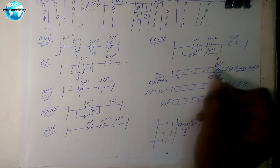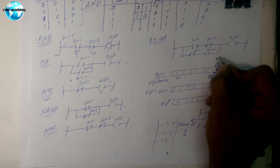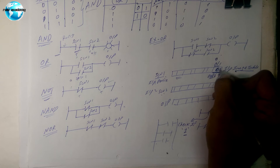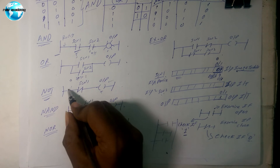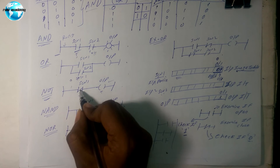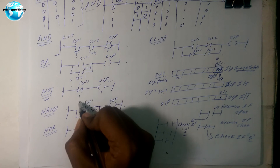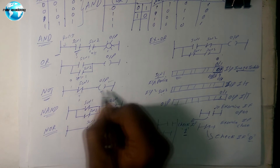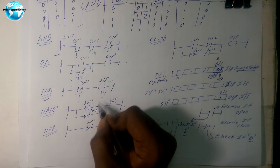When the switch is pressed, the bit becomes one. The NOT gate contact is checking for zero, so it becomes false. No output will glow — output is false.